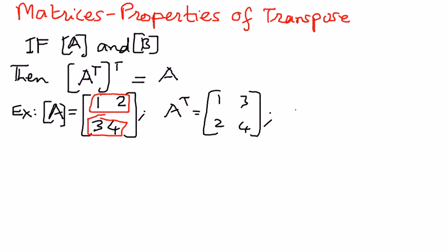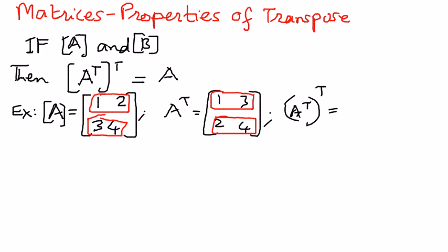If we take this transpose matrix and transpose it again — converting its rows into columns — we get 1, 3, 2, 4, and this matrix is exactly what we started with. This is the same as matrix A.